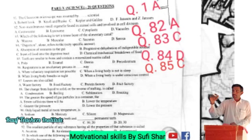Robert Hooke invented the compound microscope. He invented it in 1665.